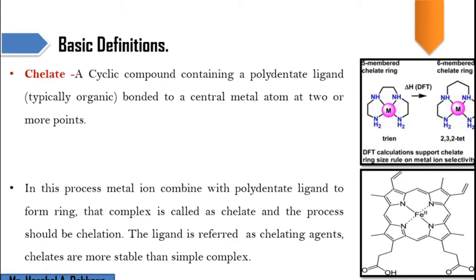Another basic definition is the chelate — cyclic compounds containing a polydentate ligand, typically organic, bonded to the central metal atom at two or more points. To understand chelates, we need to know the two types of ligands: monodentate and polydentate. Monodentate ligands donate only one lone pair to the metal, while polydentate ligands donate more than one lone pair.